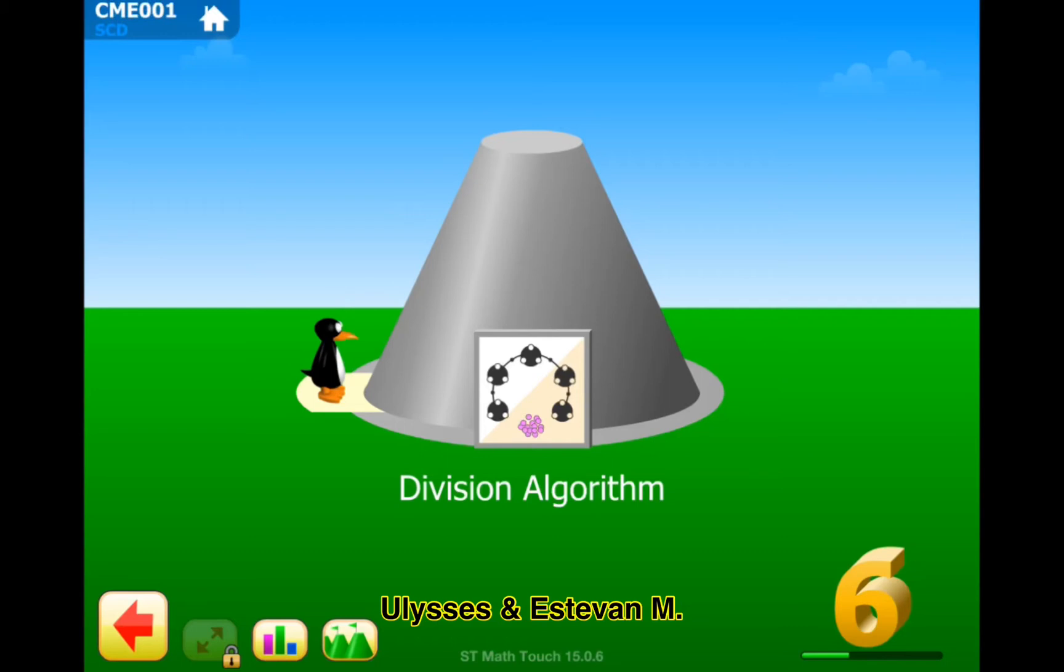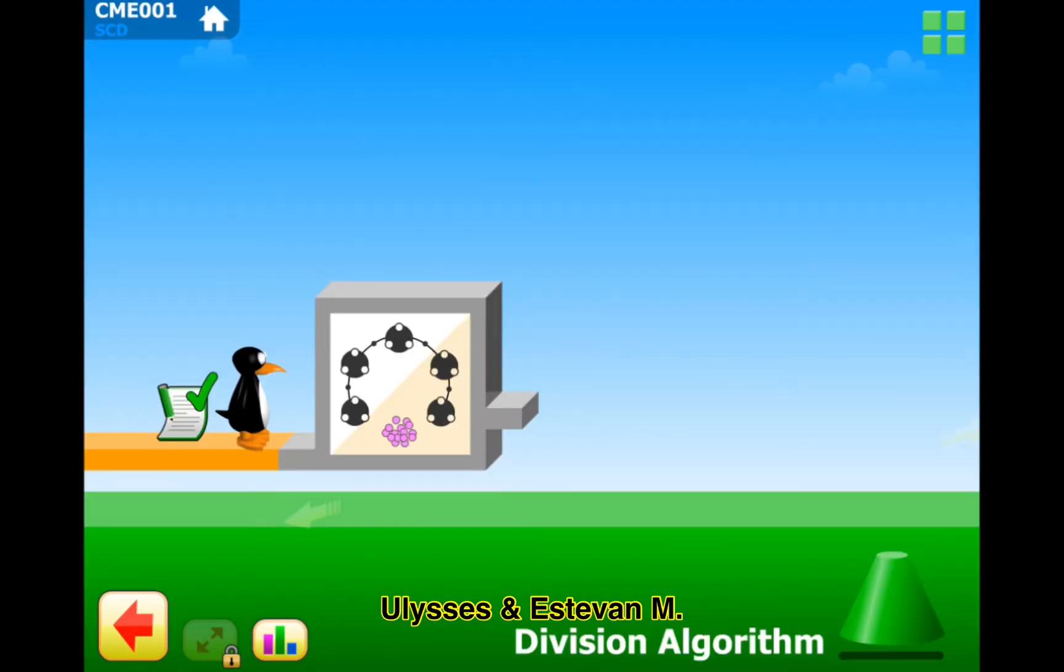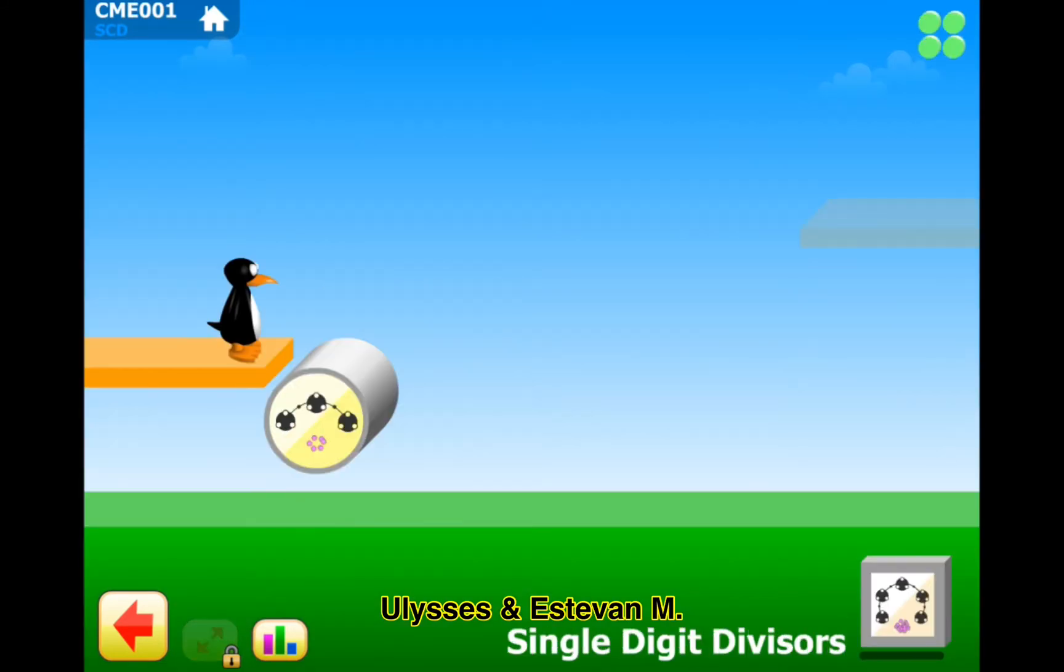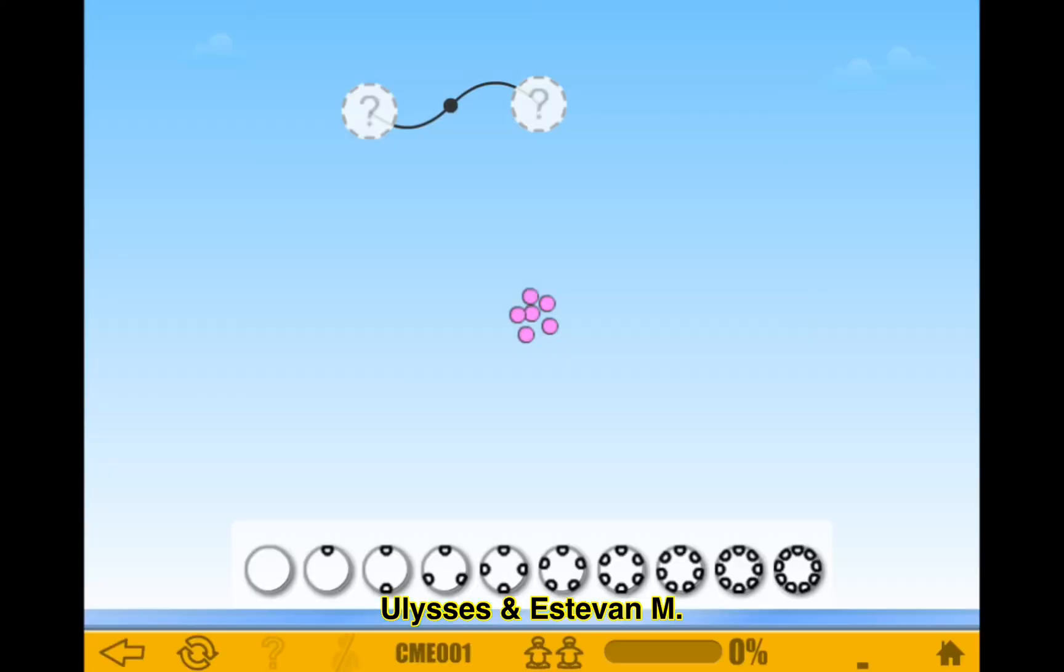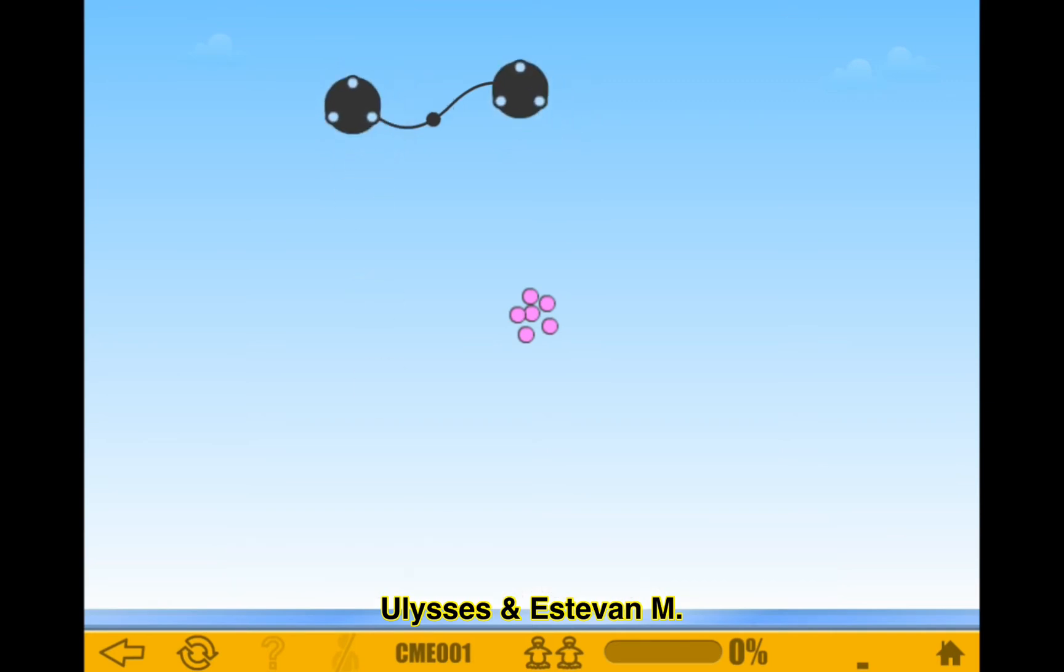Welcome to our channel, Ulysses and Estevan. Let's practice sixth grade division. Section one, single-digit divisors. Puzzle one, visual division level one. This is supposed to be two, three, four, five, six. I see two question marks which means I should probably do this. This looks cool.